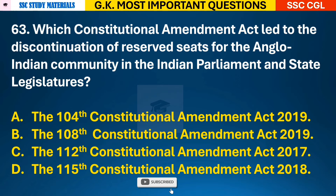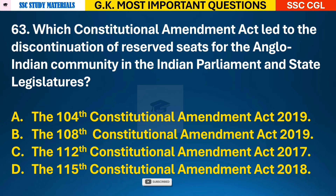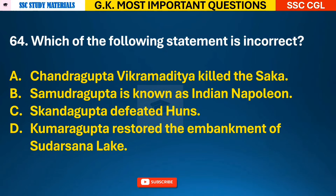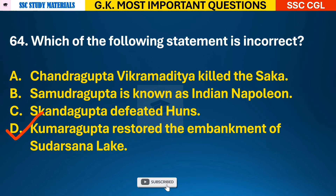Question 63: Which Constitutional Amendment Act led to the discontinuation of reserved seats for the Anglo-Indian community in the Indian Parliament and State Legislatures? Answer A - the 104th Constitutional Amendment Act 2019. Question 64: Which of the following statements is incorrect? Answer D - Kumara Gupta restored the embankment of Sudarsana Lake.